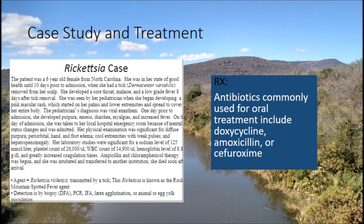Epidemiologically, Rickettsia rickettsii is the most common rickettsial pathogen in the United States. The vectors are hard ticks such as dog ticks, wood ticks, and some deer ticks. Ticks are both the primary reservoir and the vector of the bacteria. Distribution is mostly in the western hemisphere, with infection most common in the southern Atlantic region. The disease is most common from April through September.